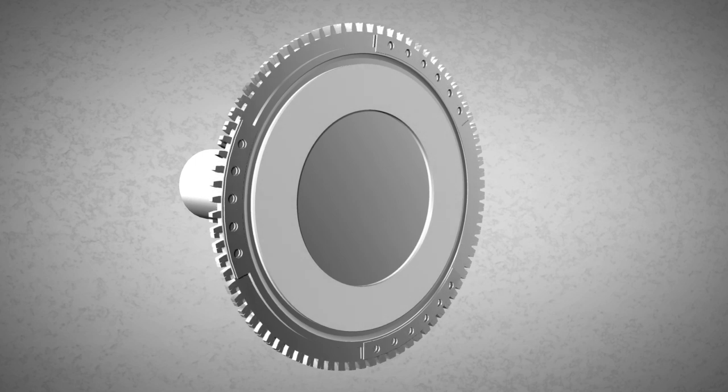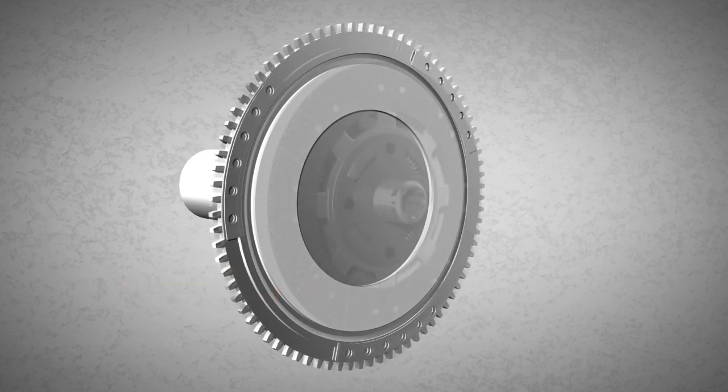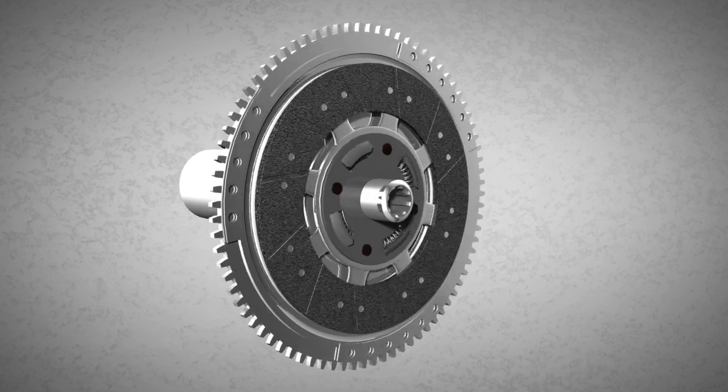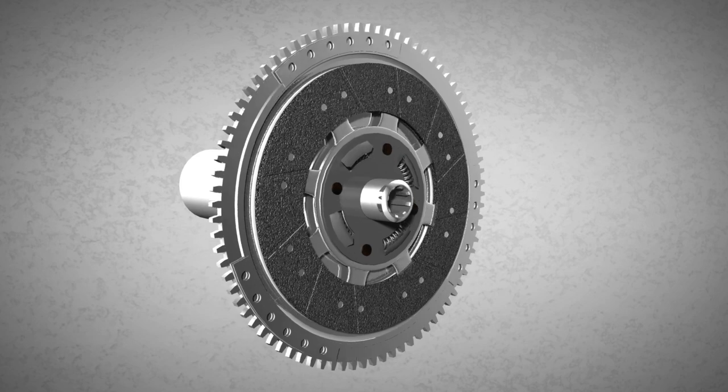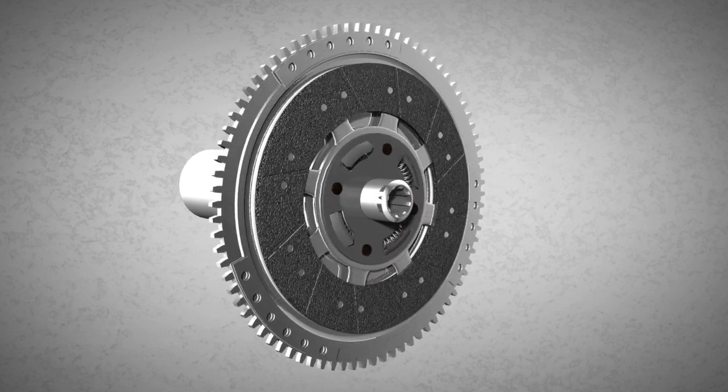The flywheel is equipped with a friction surface. The clutch disc has friction surfaces too. When the friction surface of the flywheel and the friction surface of the clutch disc are brought into contact with each other, the clutch disc rotates.